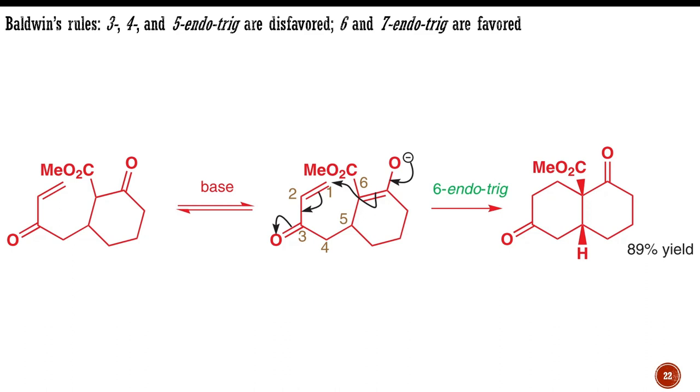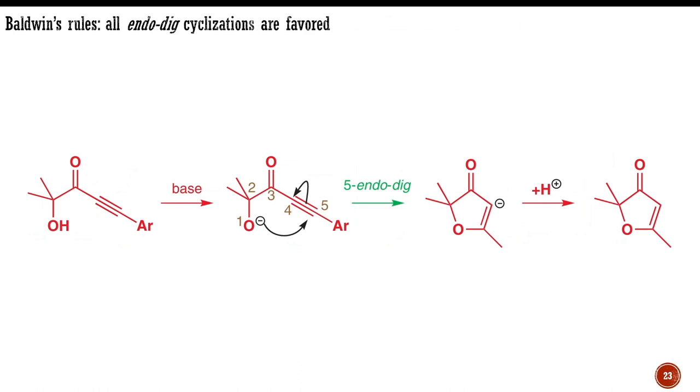With tetrahedral and trigonal cyclizations, exo-attack of the nucleophile is better than endo-attack; with digonal cyclizations, the reverse is true. The final rule we should discuss here is that all endo-digonal cyclizations are favored. Even 4-endo-digonal reactions work.